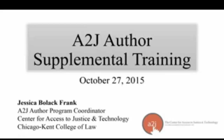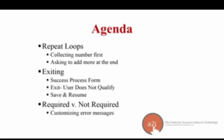Welcome everyone to day two of our A2J Author Supplemental Training. This is Jessica Frank with the Center for Access to Justice and Technology. Today we're covering three issues in A2J Author 5.0: how to do repeat loops, collecting the number first and asking to add more at the end; exiting the success process form and exit user doesn't qualify; and how to enable save and resume if you're using LawHelp Interactive. We'll also talk about required versus not required and customizing error messages.